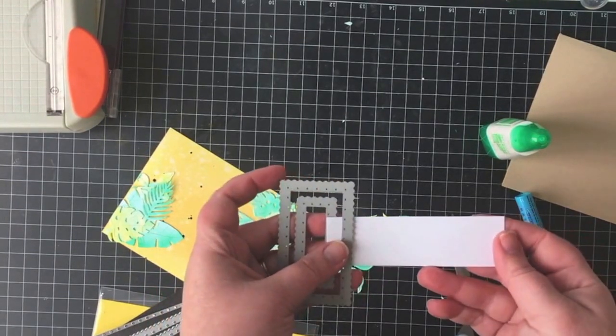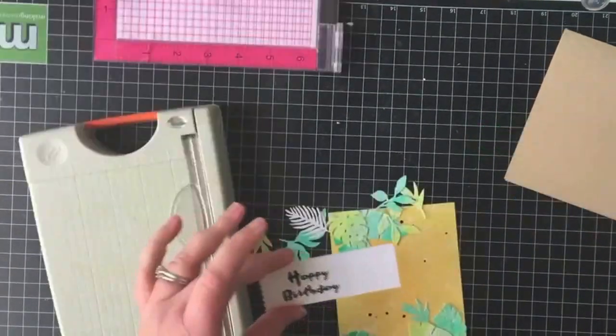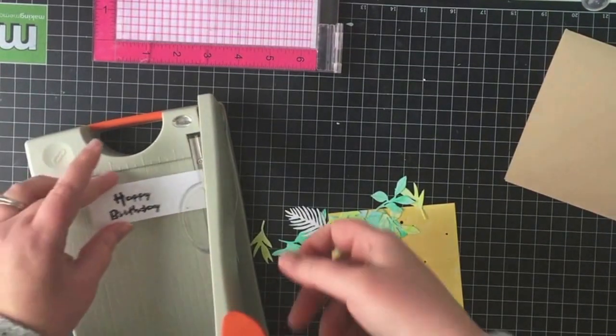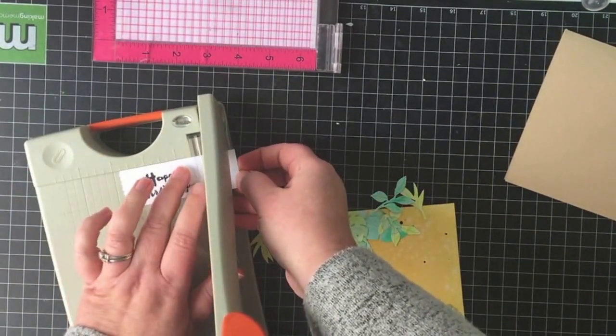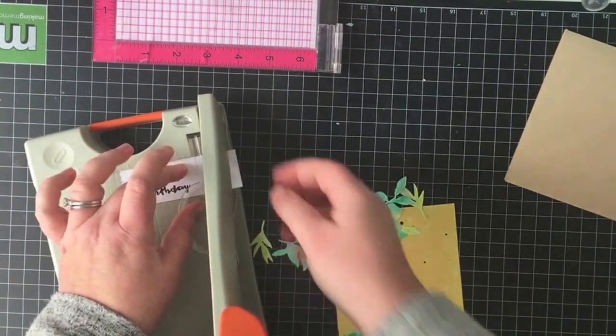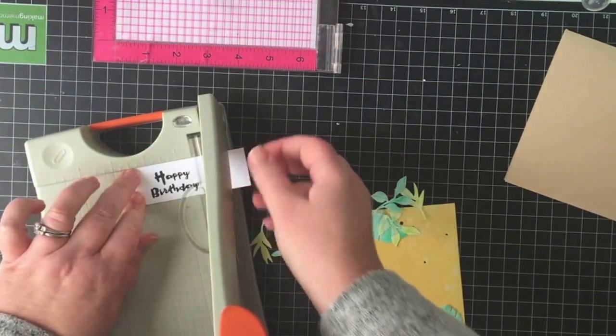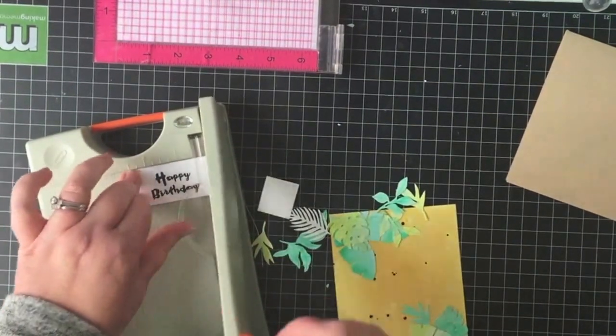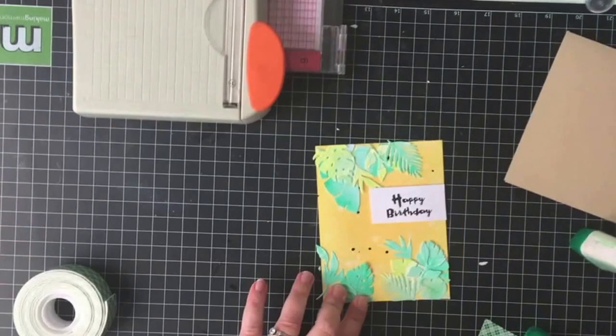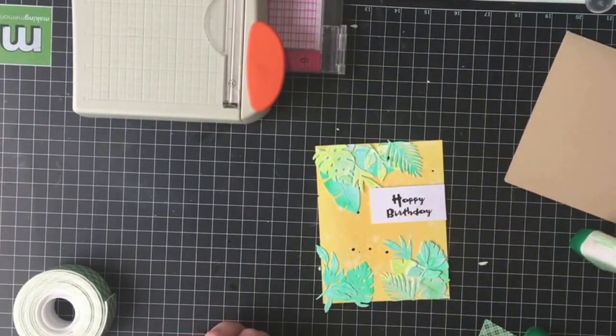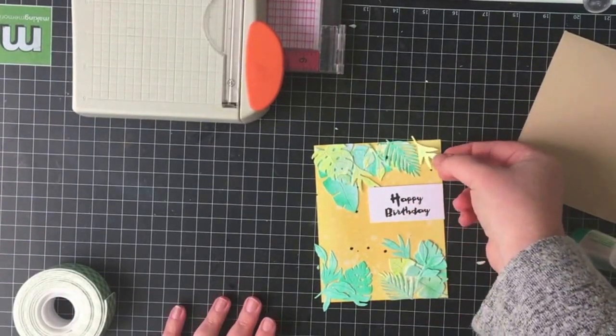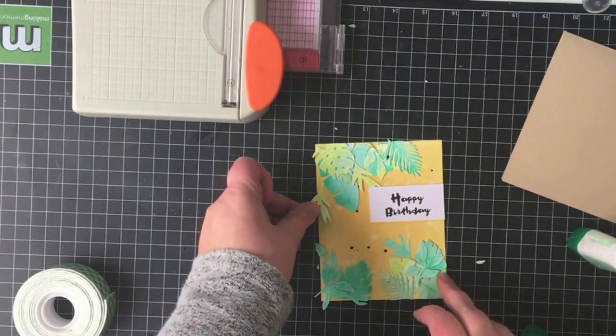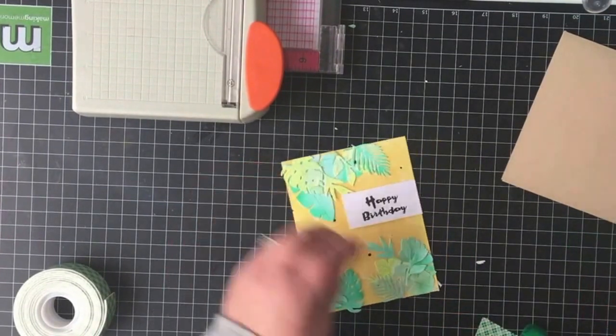I've got some of these tacked down and now I need to figure out how I'm going to create my sentiment. I'm going to use a sentiment from the balloon messages stamp set, it has a really beautiful scripty brush font. I've stamped the happy birthday in black ink onto a banner and I die cut the edge of the banner with the pinking layers die and adhered it to the card with a bit of foam tape.